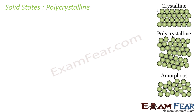Crystalline and amorphous are the extreme cases, but naturally not all substances are pure crystals or pure amorphous. We have something called polycrystalline, which is in between crystalline and amorphous. These are solids composed of crystallites of varying size and orientation, separated by fine grain boundaries.